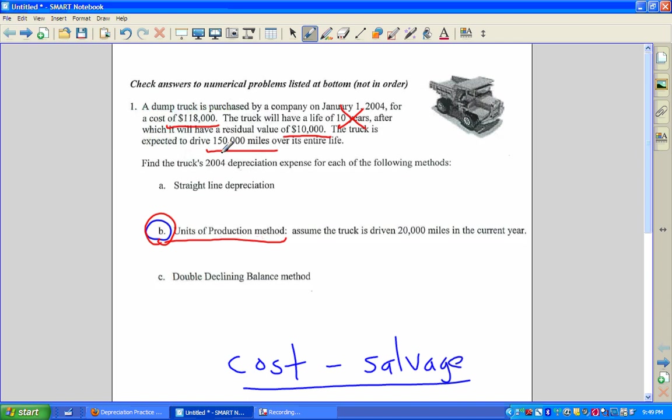Whether it was a photocopier, whether it was an oil pump that's going to pump a certain number of barrels, whether it's a machine in a factory that's going to make 10,000 widgets or 10 million widgets, doesn't matter. For vehicles, it's usually miles. So the formula for units of production method is very similar to straight line,